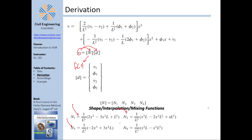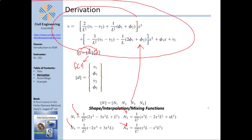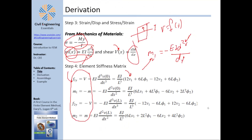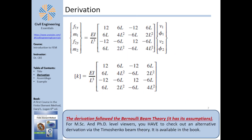After deriving the shape functions with respect to x, you plug in x=0 or x=L to get the relationships between shear and moments at each node and the nodal displacements. This produces the local stiffness matrix — the matrix that relates local forces (vertical force start, moment start, vertical force end, moment end) to local displacements. This is the beam element stiffness matrix: (EI/L³)·[12, 6L, −12, 6L; 6L, 4L², −6L, 2L²; ...].